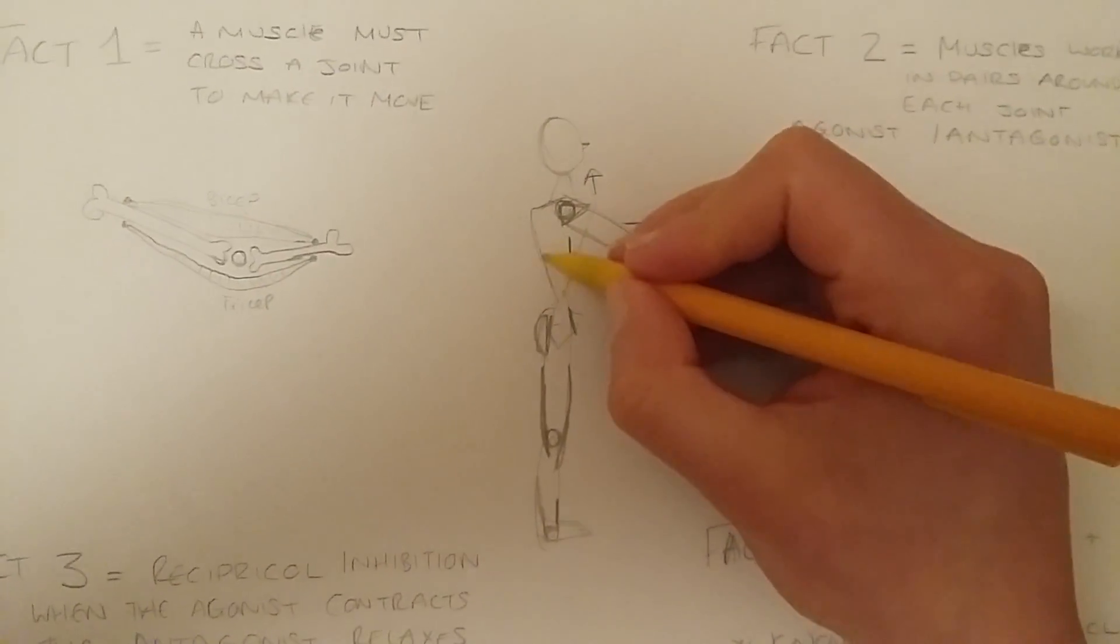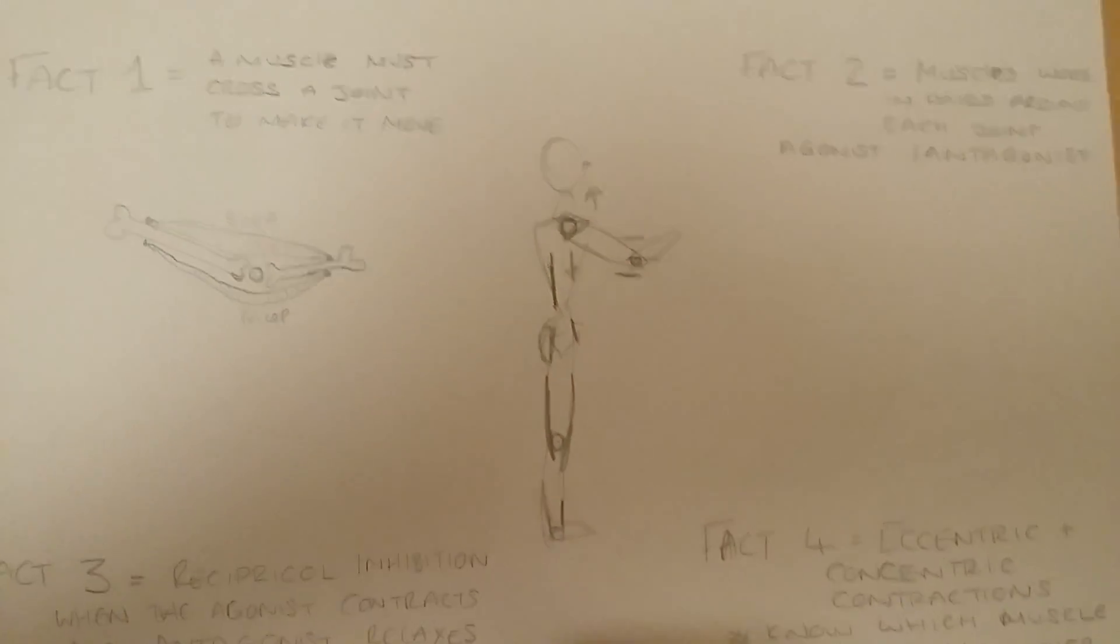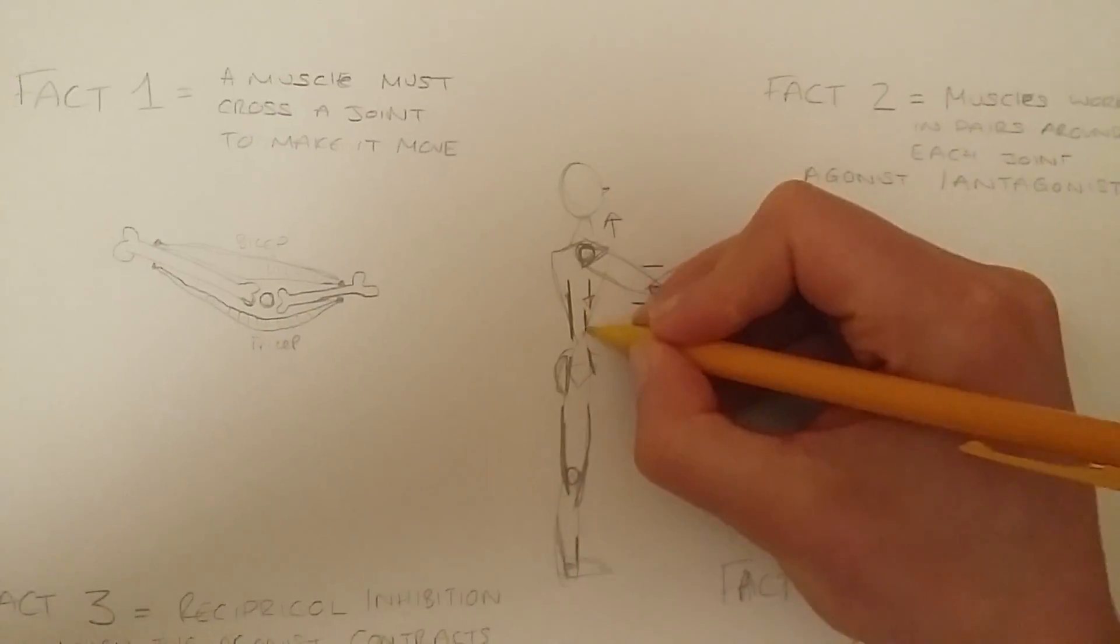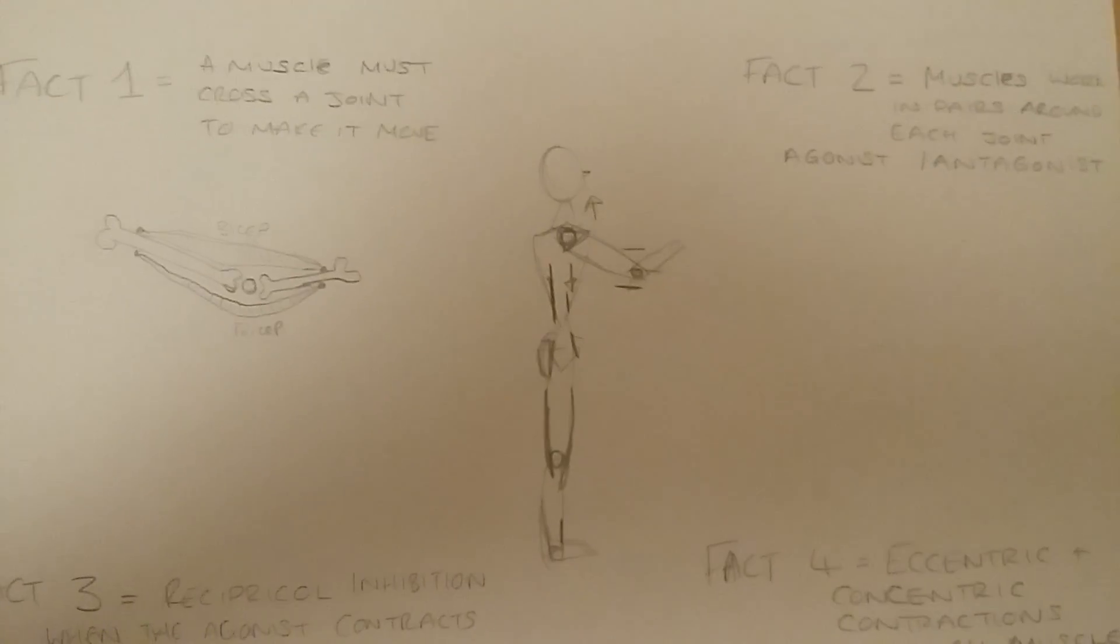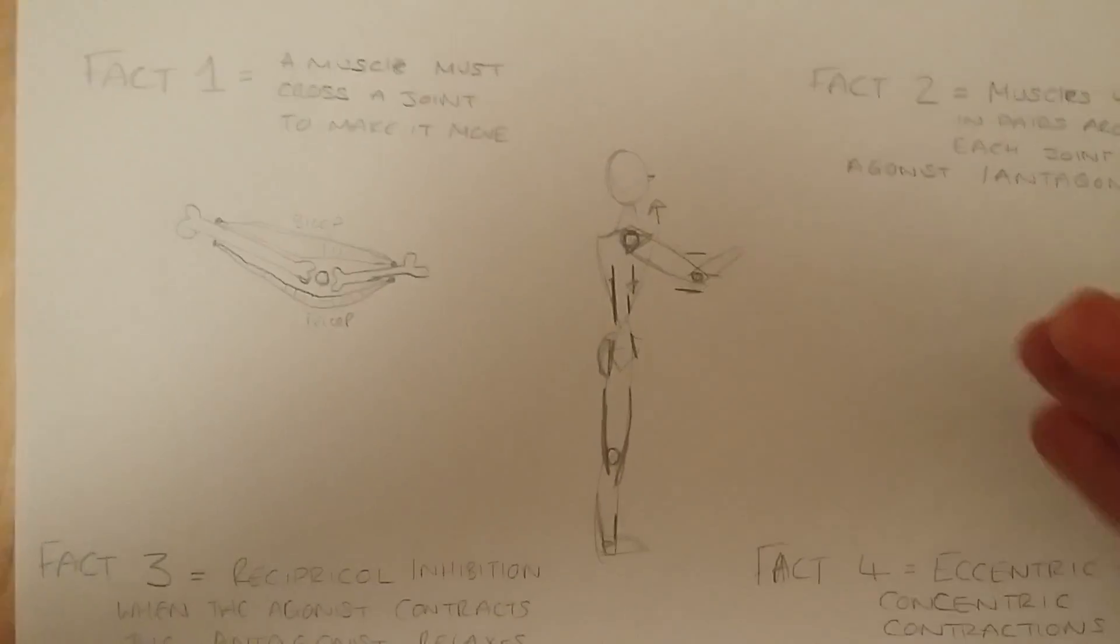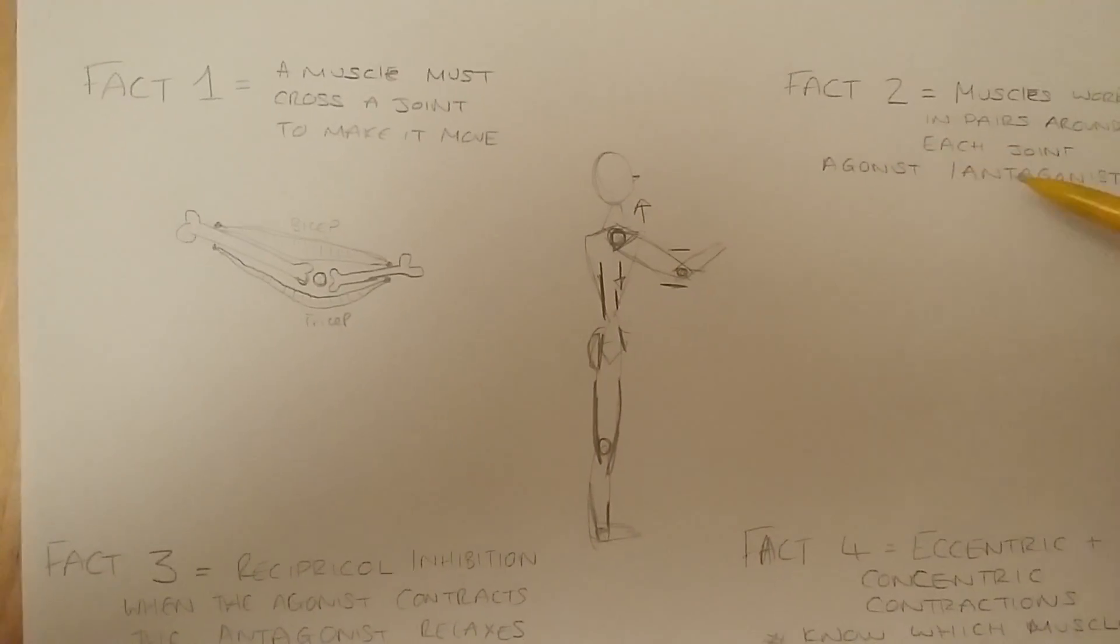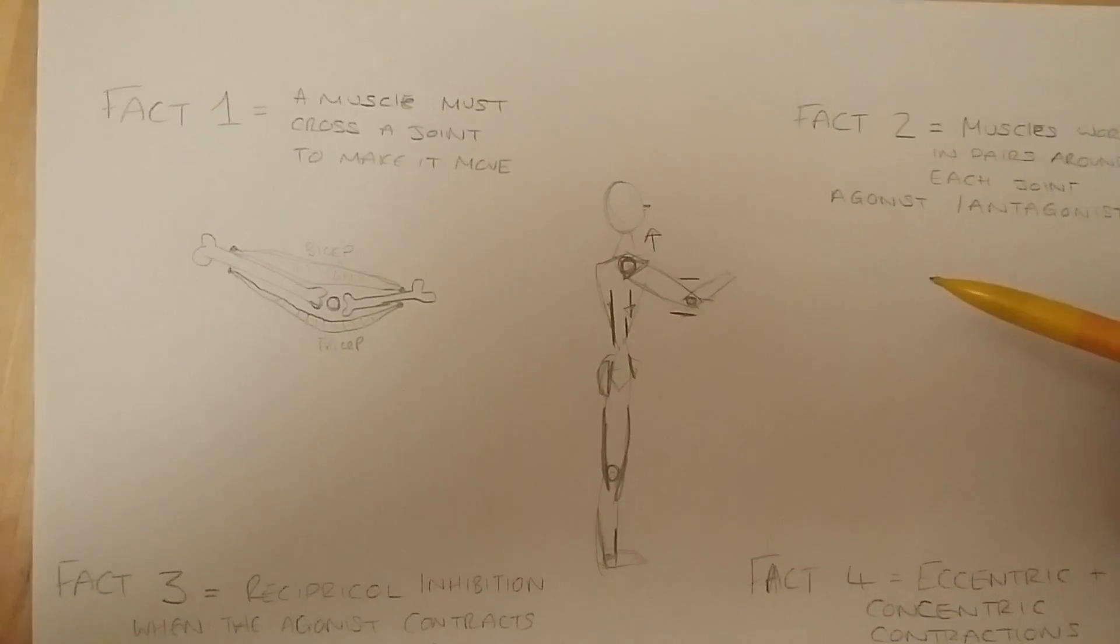You could extend that further. Let's go one more actually. You've got erector spinae on the back that runs either side of your spine and your rectus abdominis on the front. So they are antagonistic pairs. So when you have your joint, make sure you're aware of the muscles that work either side of it as an agonist-antagonistic pairs.